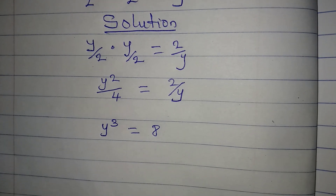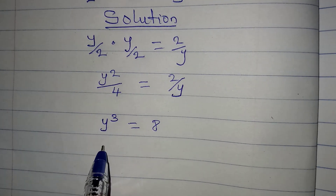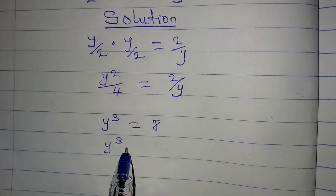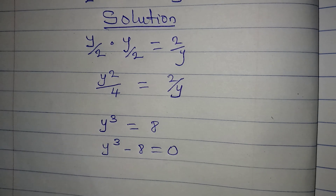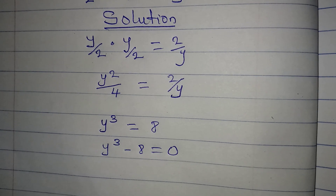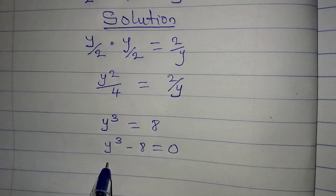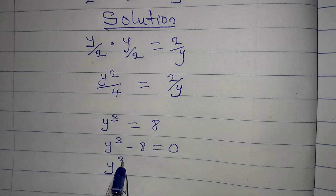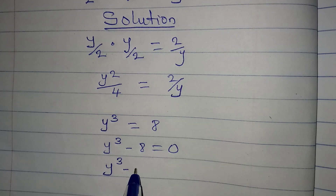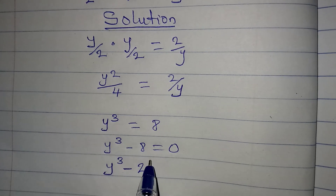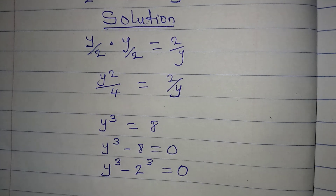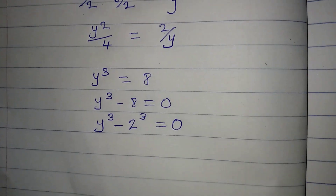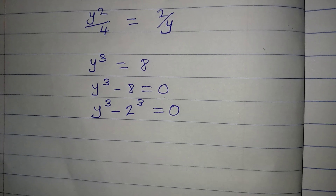Now we bring it to the left, so we have y to the power of 3 minus 8 equals 0. Our next target is to express this with the same power, so we write y cubed minus 2 cubed equals 0, because 8 is 2 to the power of 3.